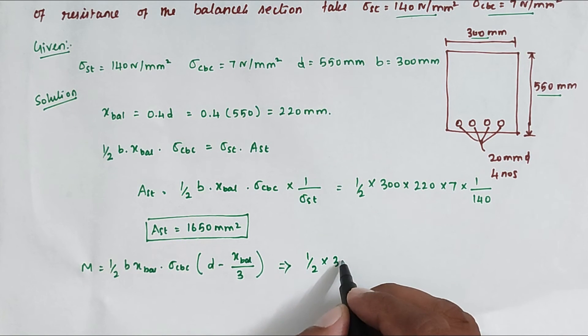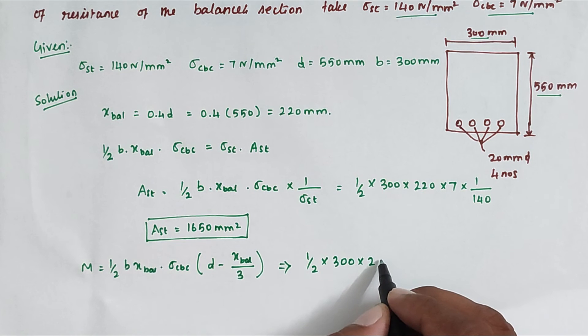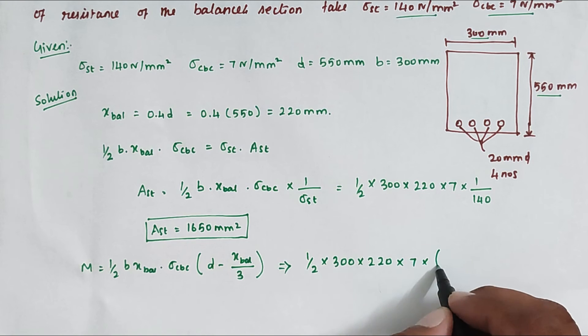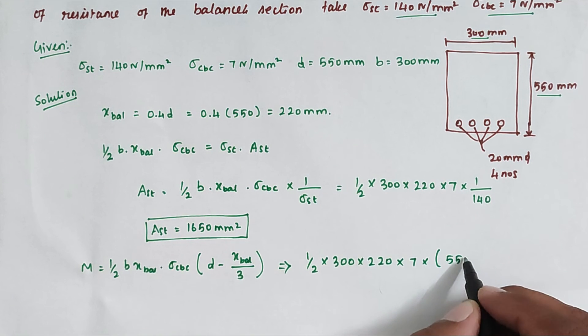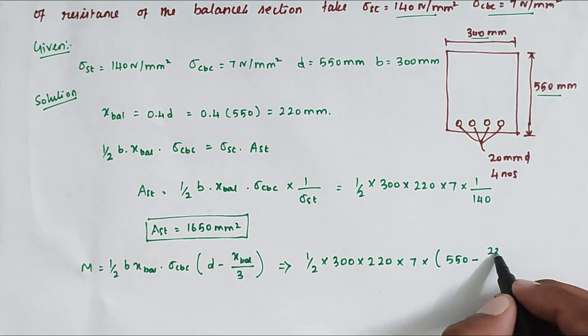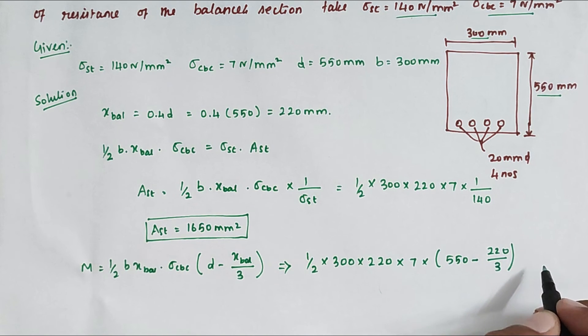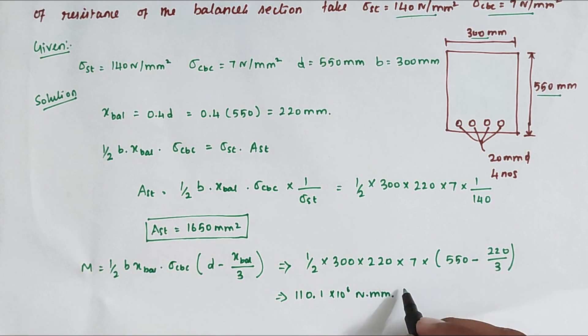Solving this, we got the value of 110.1 × 10⁶ N·mm. We can convert this into kilonewton meter, so 110.1 kN·m. This is the moment of resistance.